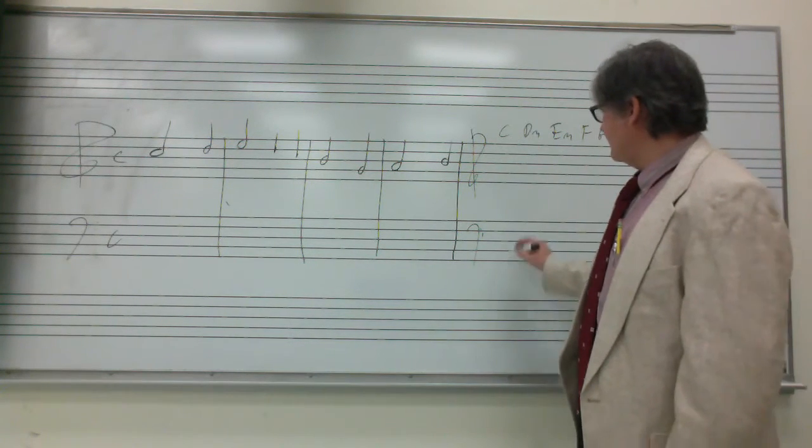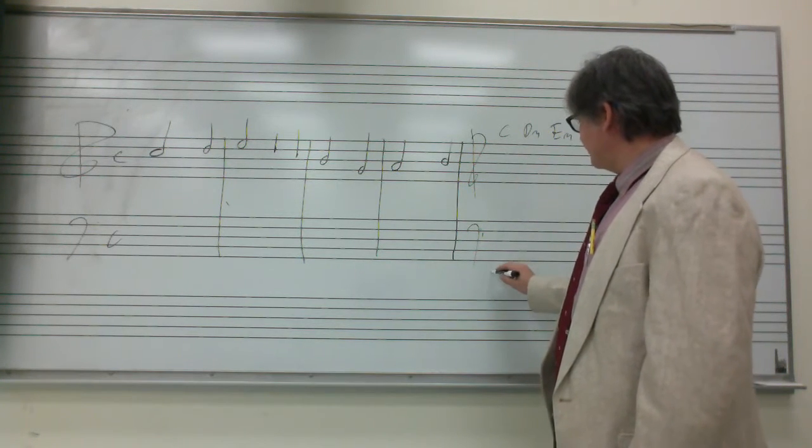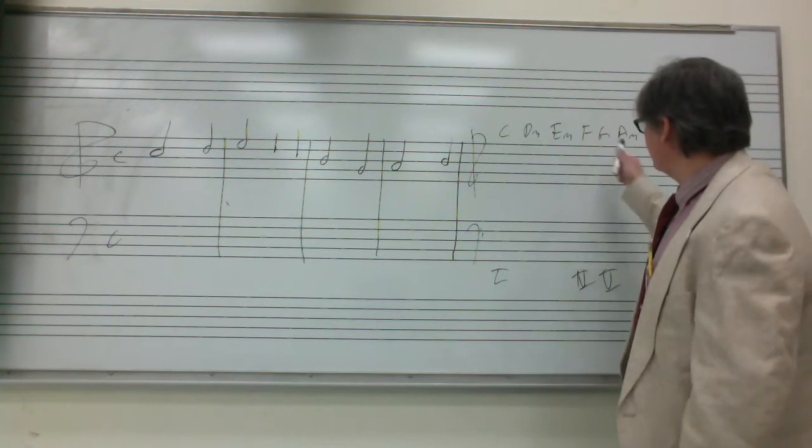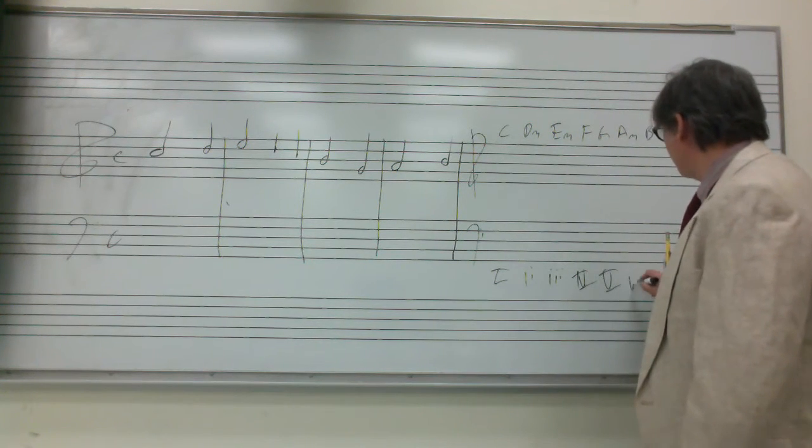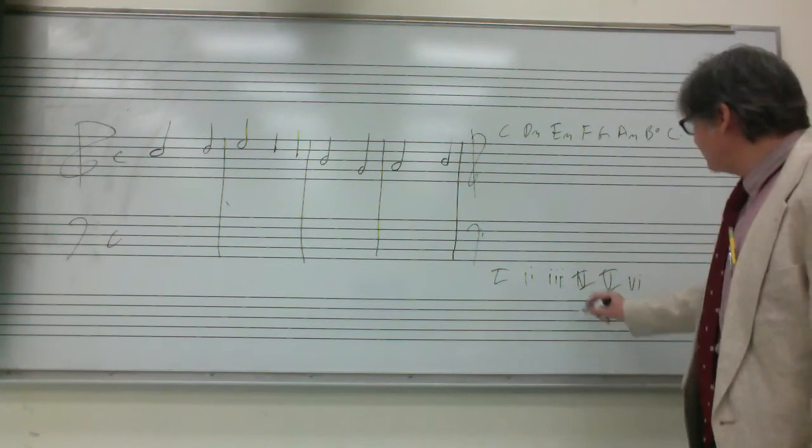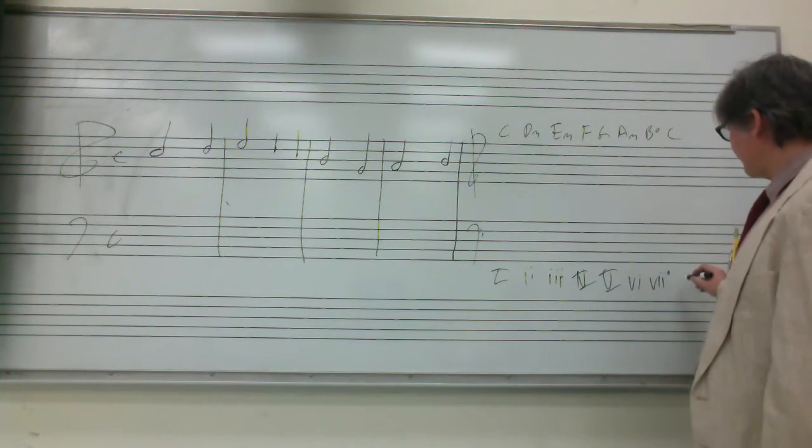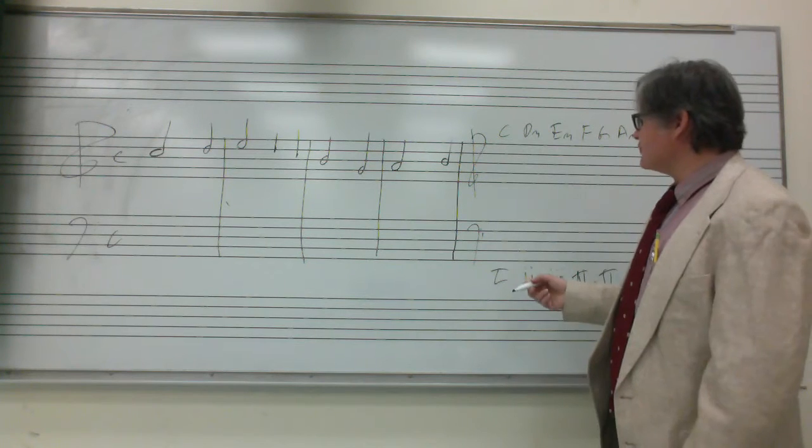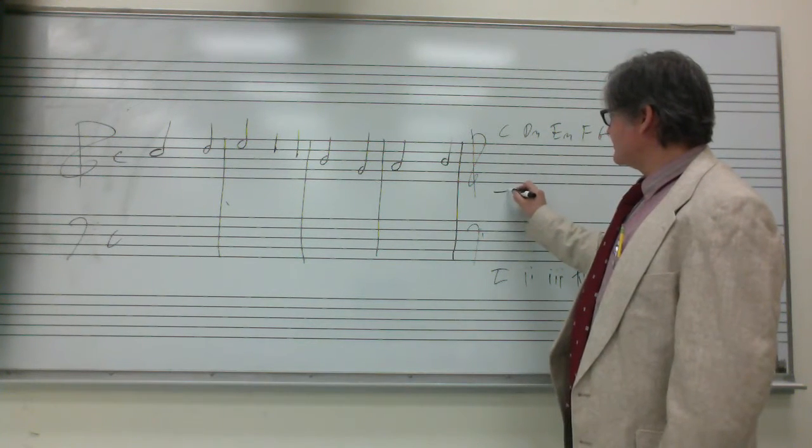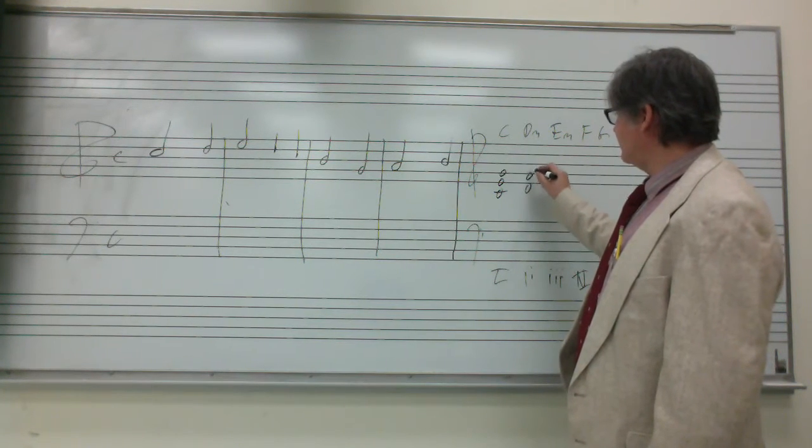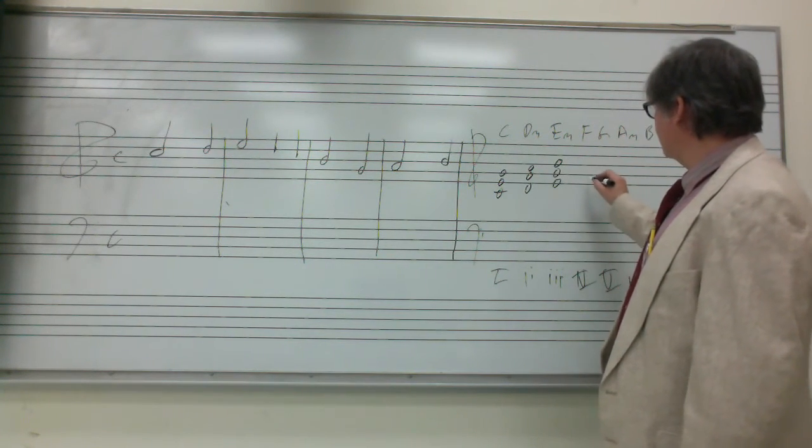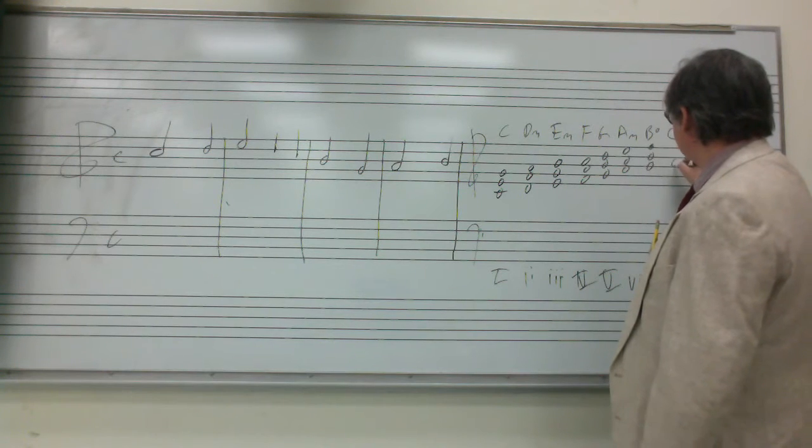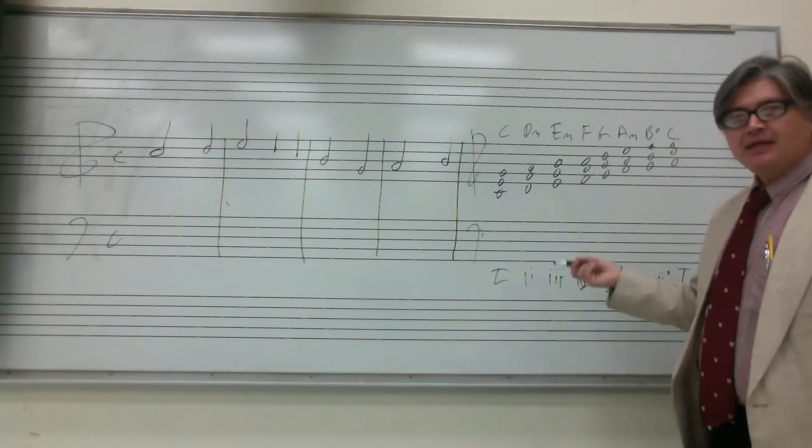Down here we'll have the 1 chord, the 4 chord, and the 5 chord—all major, so they get the big Roman numerals. The 2, the 3, and the 6 are minor, so we put them as small Roman numerals. And then there's a special diminished chord there and back to the 1 there. In here we have the notes for C. The notes for C are C, E, and G. For D minor: D, F, A. Basically all I have to do is stack thirds in the key, and it will work.